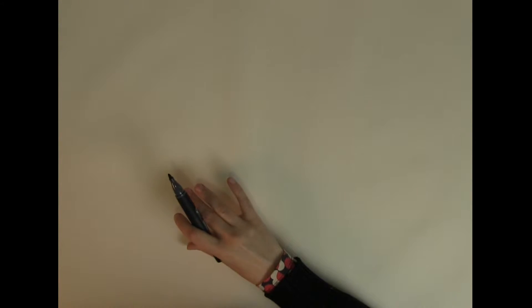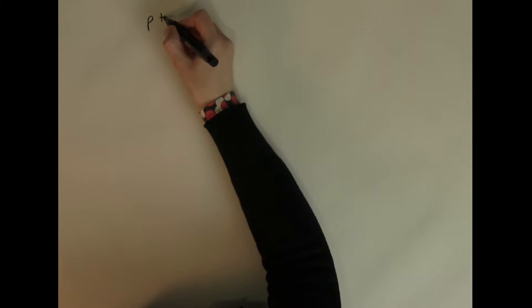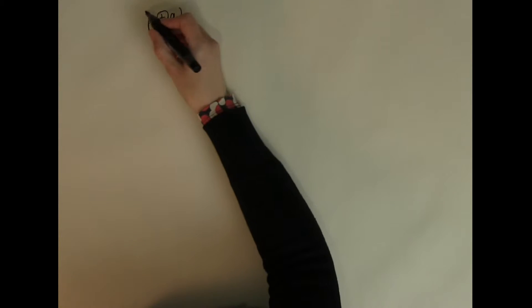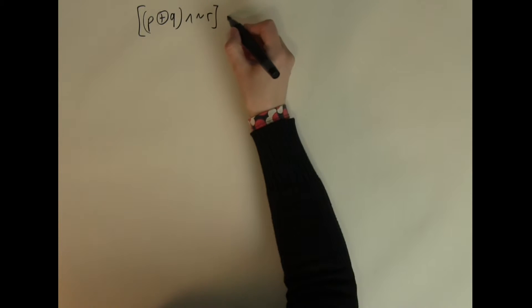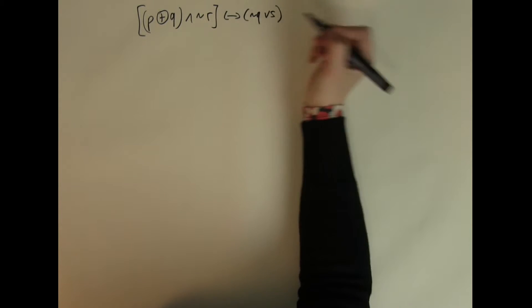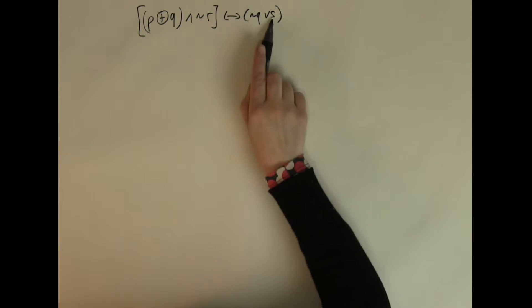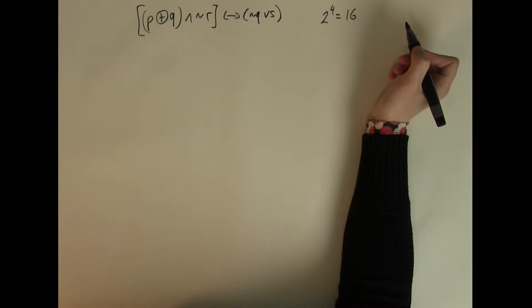Let's finish with a very complicated truth value table using four input values. The expression is: (P XOR (Q AND NOT R)) IF AND ONLY IF (NOT Q OR S). I have four different letters — P, Q, R, and S — and two to the four equals sixteen, so I'm going to have a rather long truth value table.